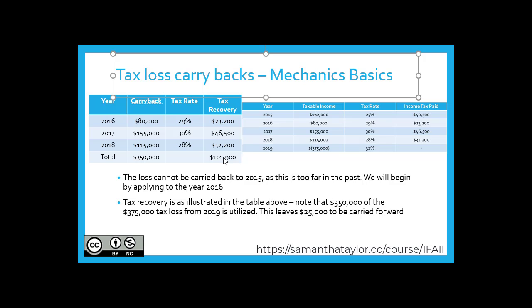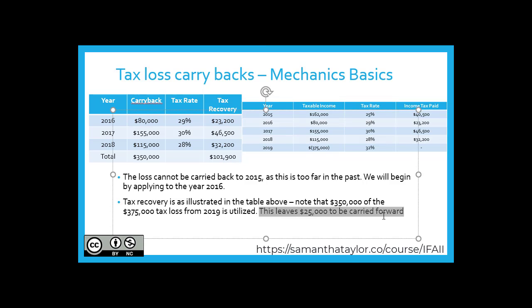What does that mean for the remaining $25,000? It means that $25,000 can be carried forward. So your options here are to carry back, carry forward, or — as you'll sometimes see in CPA exams — a combination of both. This is one of those instances where it would be a combination of both, since you can't utilize the entire loss with a carryback because you can't go beyond three years back.